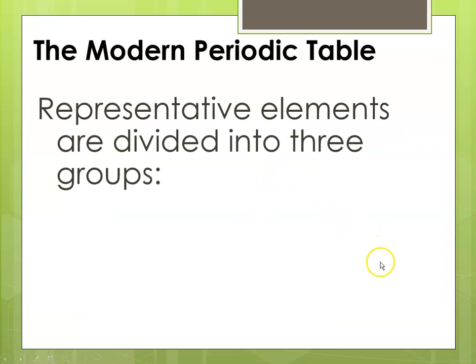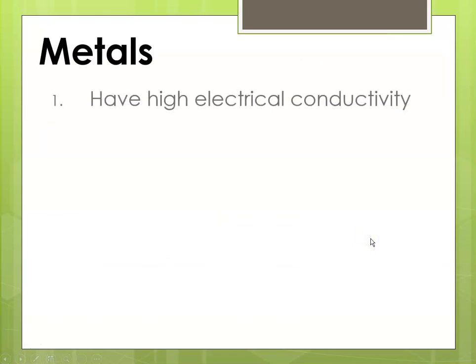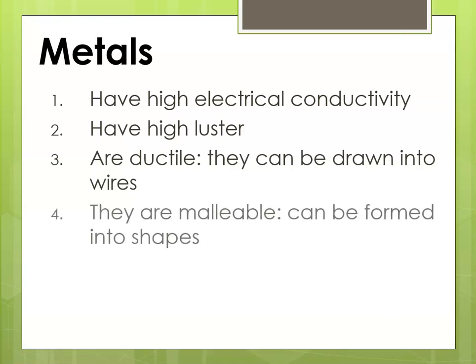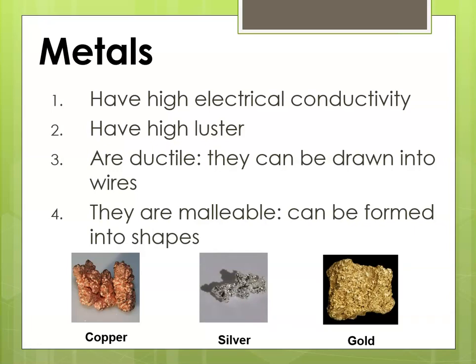The representative elements are divided into three groups: metals, non-metals, and metalloids. The metals have, in general, high electrical conductivity, thermal as well. They have high luster, that means they're shiny. They are ductile, that means they can be drawn into wires. Think about you can't do that with a lump of carbon, but you can draw copper into a wire. They are malleable, which means they can be hammered or formed into shapes. Here's copper looking all shiny, silver also looking shiny, and gold looking nice and shiny.